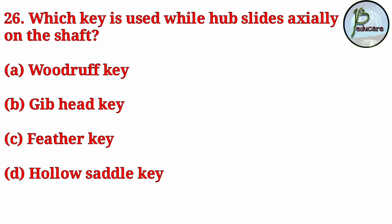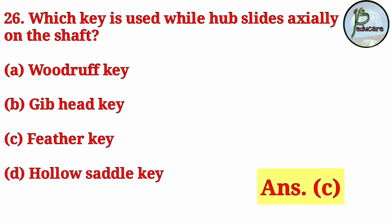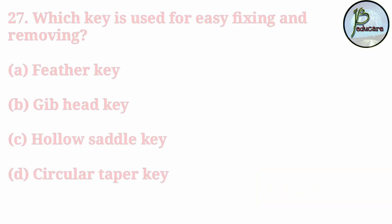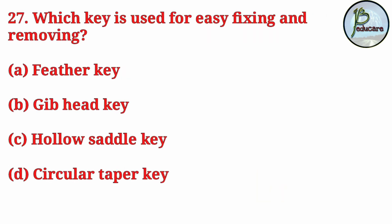Next question: which key is used while a hub slides axially on the shaft? The correct answer is option C: feather key.